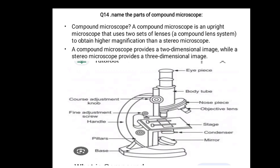Question number fourteen: name the parts of the compound microscope. A compound microscope is an upright microscope that uses two sets of lenses to obtain higher magnification than a stereo microscope. A compound microscope provides a two-dimensional image, while a stereo microscope provides a three-dimensional image. A diagram is provided — draw it.